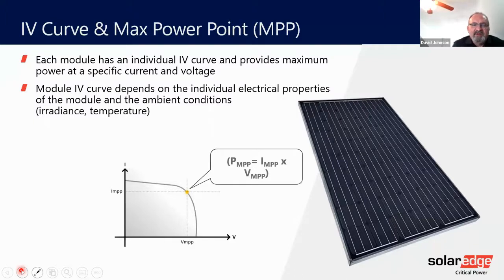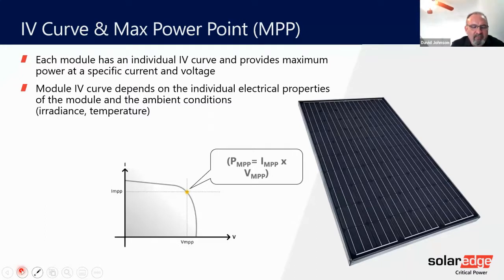A solar system is based on solar panels, which I'm sure you all are aware of, also known as modules that produce power. Each module has an optimal working point, as illustrated in the graph — the PMPP, which is max power point.